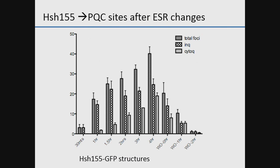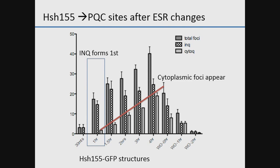To address this, we tracked the accumulation of HSH-155 at these sites over time. The checkered bars represent nuclear sites and the horizontal lines cytoplasmic sites. It takes about an hour for a significant number of cells to show nuclear quality control sites, and cytoplasmic sites lag — appearing later. There seems to be an overflow mechanism from nuclear sites leading to accumulation in cytoplasmic sites. After MMS washout, the foci disappear quickly.